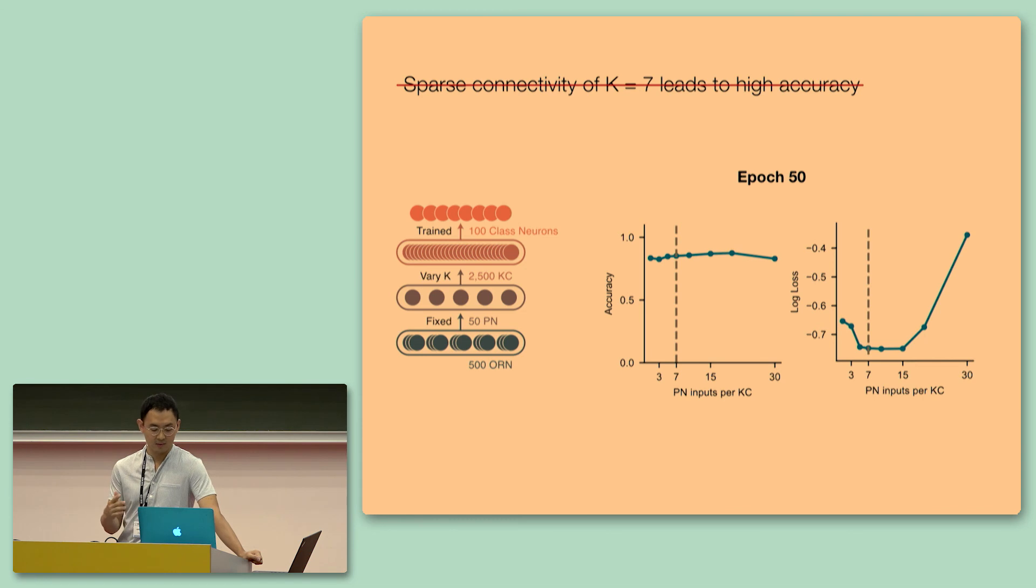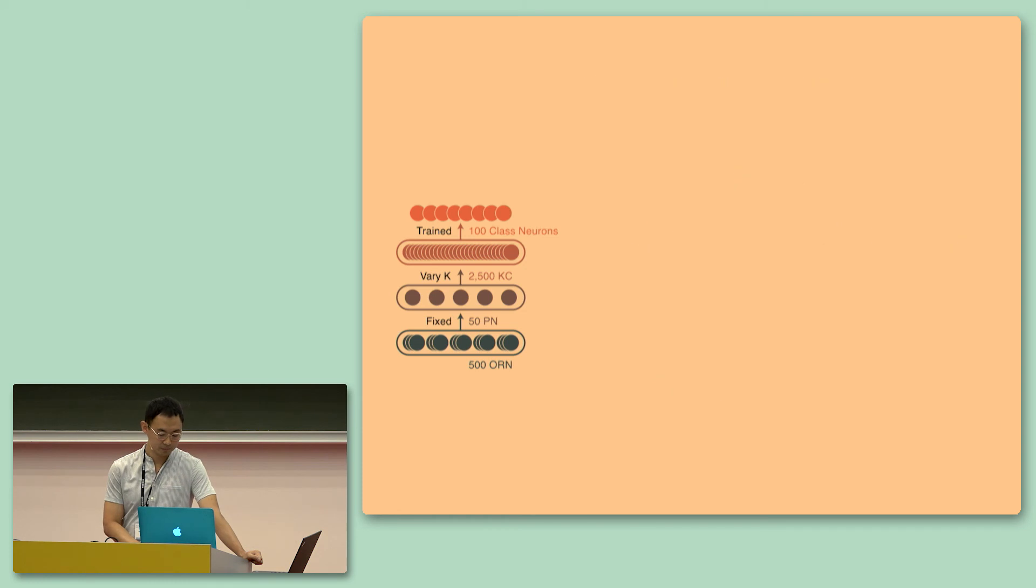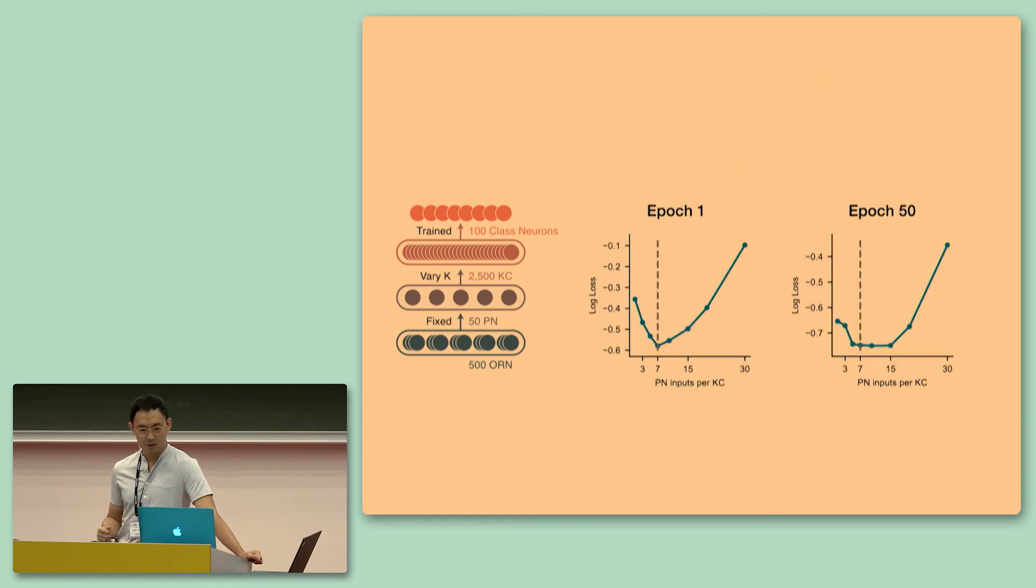Because clearly, classification accuracy does not lead to sparse connectivity. And it turns out that when we examine loss and accuracy as a function of training during early training, we observe that actually there is an optimum at 7. So it appears to us that sparse connectivity of K equals 7 leads to faster convergence and faster learning. Mathematically, we don't understand why this is right now. And if anyone has insights, I would love to talk in the future.